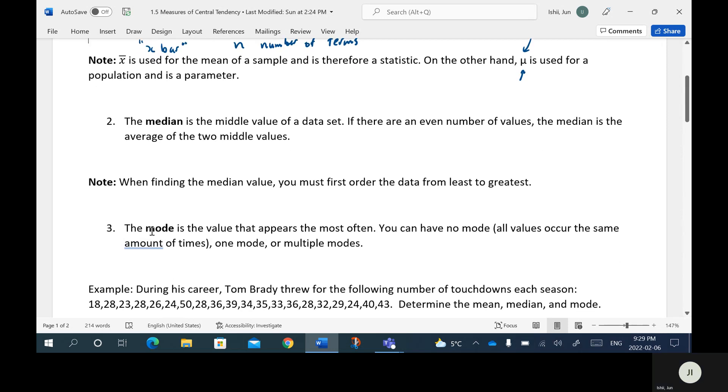The third one there, the mode, is the value that appears the most often. So you can have no mode that occurs when all the values occur the same amount of times. You can have one mode, so you can have one value that shows up the most, or you can have multiple modes actually. So there's a tie for a number that shows up the most, then two numbers that show up the most and those are both modes.